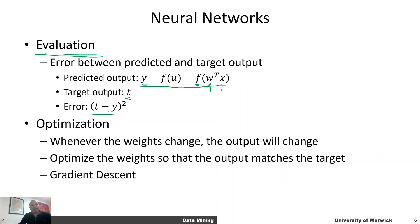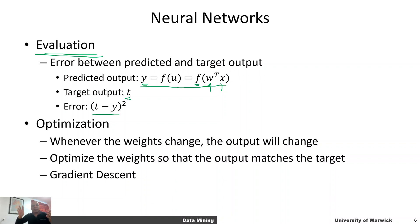We can use a squared error for a given example and then optimize this problem with respect to the weights. Whenever a weight changes, that changes the products, which changes the net input, and when we apply an activation function we get an output — and we can change that output by changing the weights. So we optimize the weights of the neuron such that its output matches the target for a given input example x. That, my friends, is how you train a single neuron.